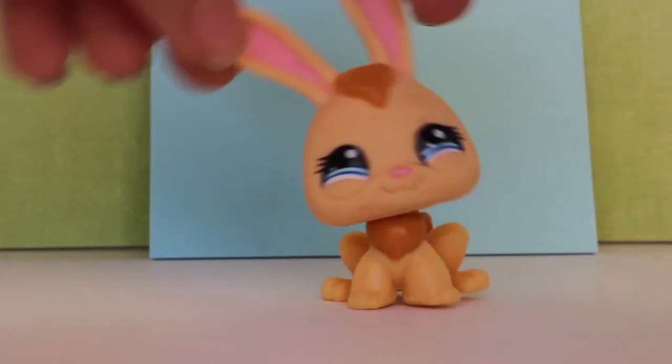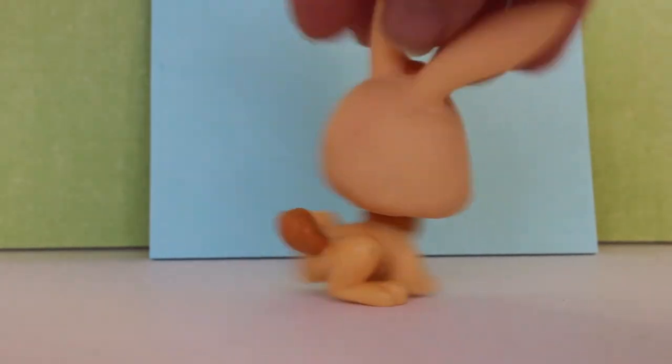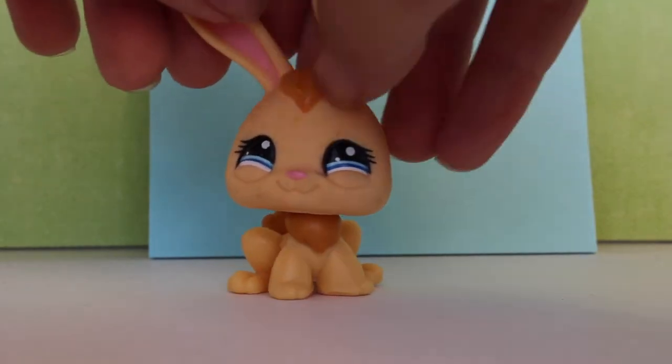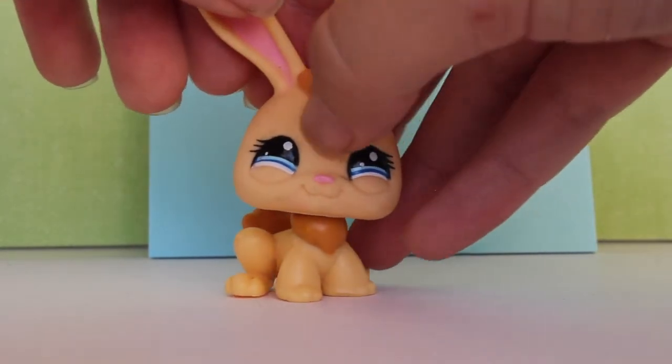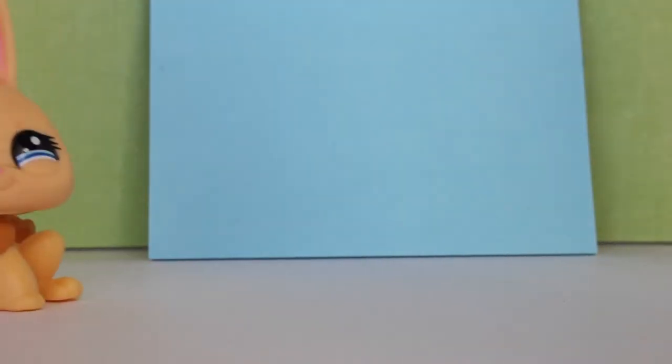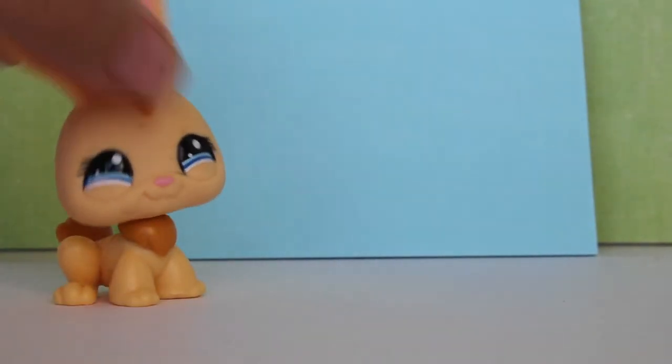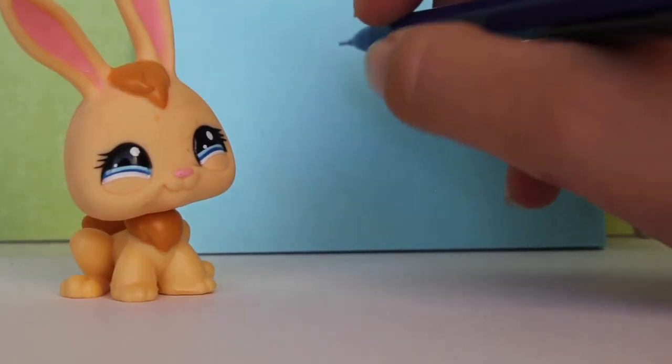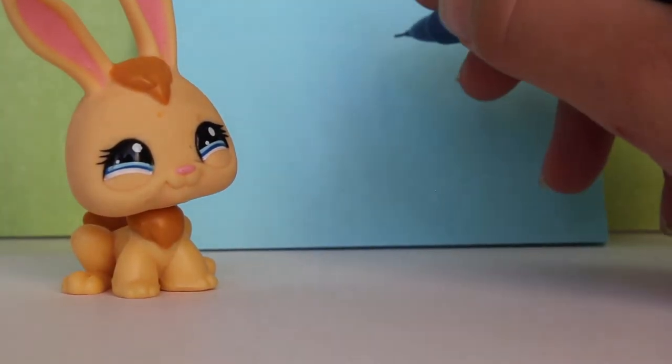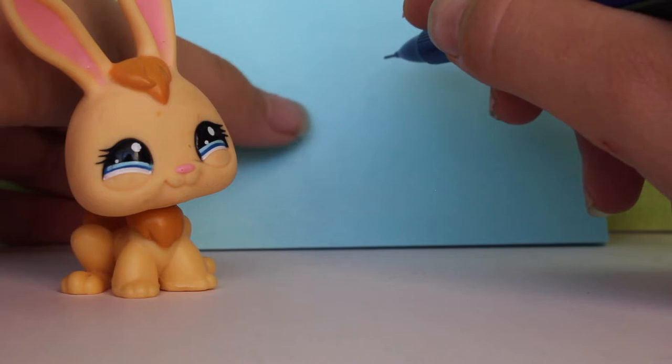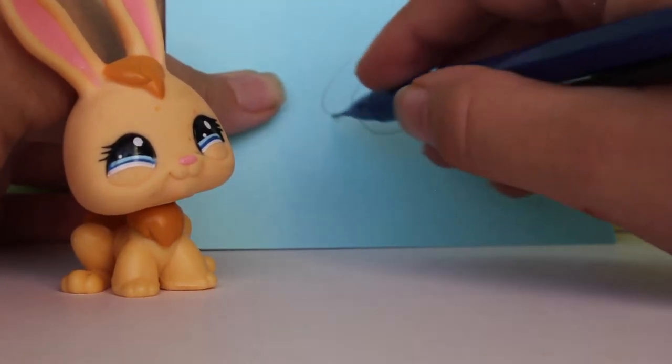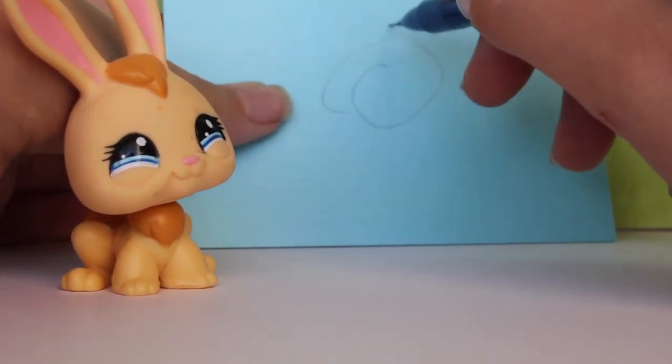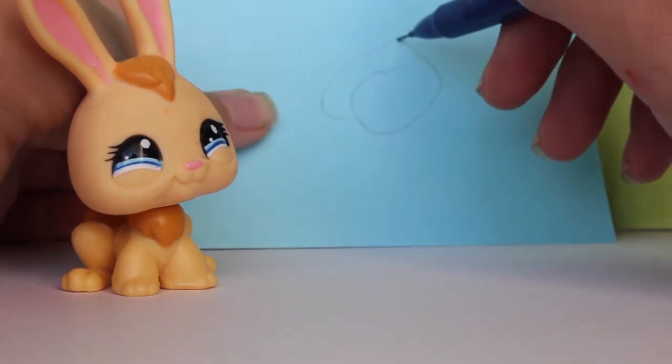So the next pet I'm doing here is this bunny. She's really cute and I'm really excited, but I'm kinda scared because I'm going to mess this up terribly. Why is she so dirty? I don't know what's going on. Why is she so dirty? Usually she's really clean, but she needs another bath. First we're gonna make the head of course. That's gonna be a big head and then we're gonna give her some ears.